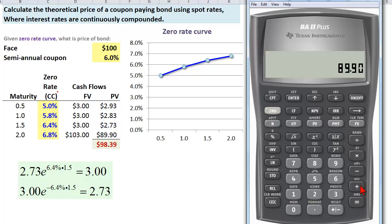So I could take 89.9, I'm going to add recall one plus recall two plus recall three equals 98.39 and you'll see it matches what I got in Excel. So we could call that the theoretical price of the bond based on discounting each of the cash flows.